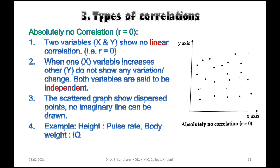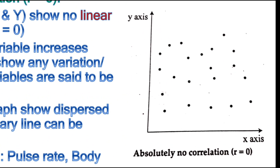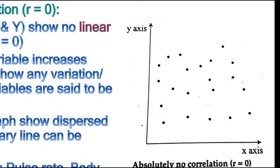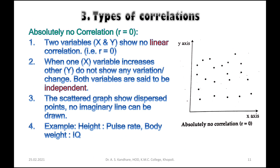When we plot the values of x variable on the x-axis and y values on the y-axis for absolutely no correlation, we get randomly dispersed dots. No straight line can be drawn. This is the graphical representation of absolutely no correlation, that is r equals zero.